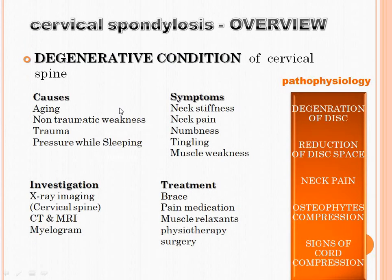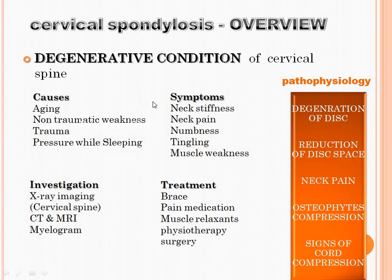Overview of cervical spondylosis: this is a degenerative condition of the cervical bone due to aging, non-traumatic weakness, trauma, and pressure while sleeping. Pathophysiology is degeneration of disc causing reduction of disc space, neck pain, and osteophyte formation which compresses the nerve causing signs of cord compression. Symptoms include neck stiffness, neck pain, numbness, tingling, and muscle weakness.